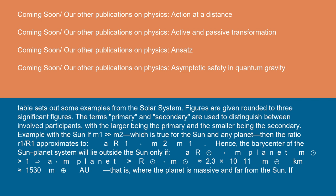For example with the Sun, if M1 >> M2, which is true for the Sun and any planet, then the ratio R1/a approximates to R1 ≈ a × M2/M1. Hence, the barycenter of the Sun-planet system...